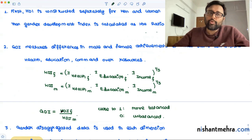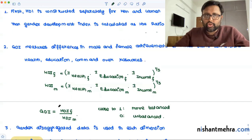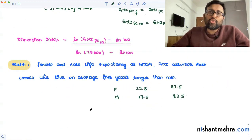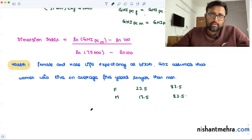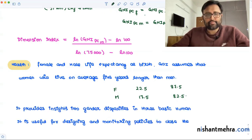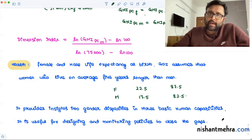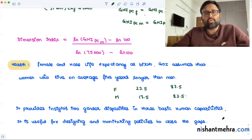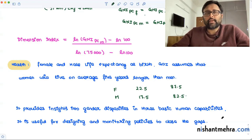Once you have all three dimension indices for both male and female separately, you substitute them into the HDI formula to get HDI for females and HDI for males. Then you find the ratio — female HDI to male HDI — which gives the Gender Development Index. This is useful to identify where gender gaps exist in the achievement of male and female capabilities, and policies can be designed to close these gaps, providing insights into gender disparities across the three basic dimensions.